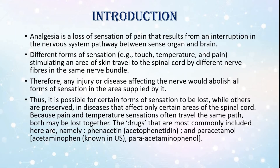Introduction: Analgesia is a loss of sensation of pain that results from an interruption in the nervous system pathway between sense organ and brain. Different forms of sensation — such as touch, temperature, and pain — stimulating an area of skin travel to the spinal cord by different nerve fibers in the same nerve bundle. Therefore, any injury or disease affecting the nerve would abolish all forms of sensation in the area supplied by it.